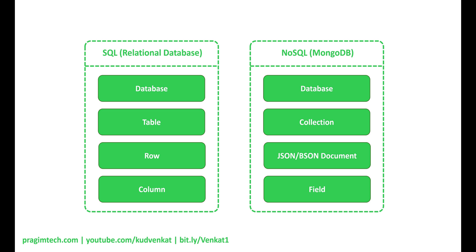It gets a bit easier if we understand these four technical terms in MongoDB: collection, document, JSON, and BSON. In a nutshell, think of a collection as a table and a document as a table row. Now let's switch gears and understand JSON and BSON.